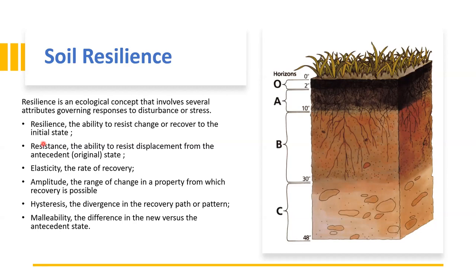Resistance is the ability to resist displacement from the original state. Elasticity is the rate of recovery — how the soil recovers when it is disturbed. Amplitude is the range of change in a property from which recovery is possible, because there is a certain limit up to which the soil has the ability to recover. If we go beyond that limit, we will not be able to see full recovery. Hysteresis is also a term used while describing soil resilience — the divergence in the recovery path or pattern.